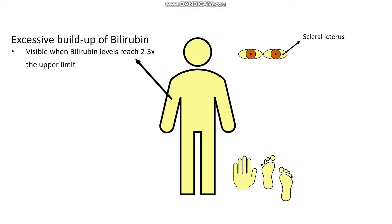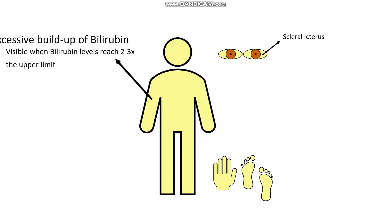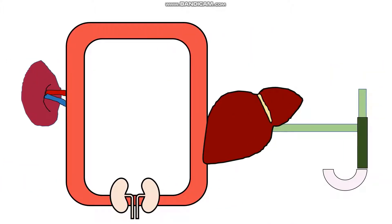Now that we understand the basics of what jaundice is, let's have a look at the mechanisms by which jaundice arises. In order to understand how jaundice comes about, we need to understand a bit about bilirubin metabolism. But before we get into that, let me orient you with this simplistic diagram. In red here you can see we have our circulation, then we have our liver, our bile duct, and then our small intestines.